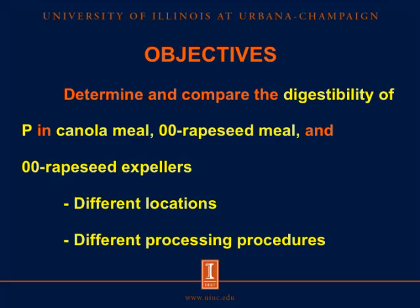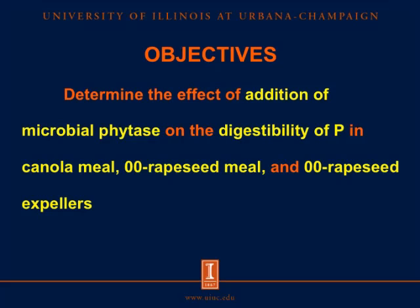The objectives of this experiment are to determine and compare the digestibility of phosphorus in canola and 00 rapeseed meal and 00 rapeseed expeller from different locations and processing procedures, and to determine the effect of adding microbial phytase on the digestibility of phosphorus in canola meal, 00 rapeseed meal, and 00 rapeseed expeller.